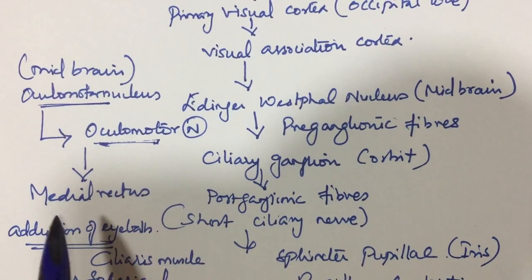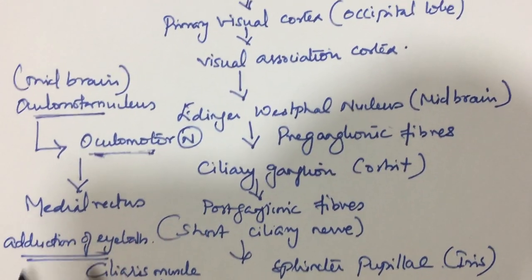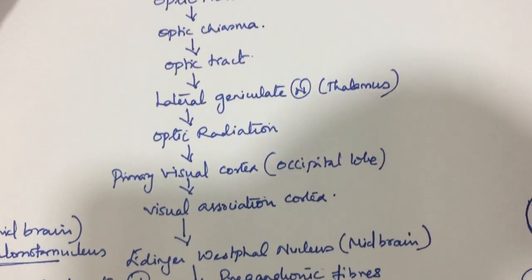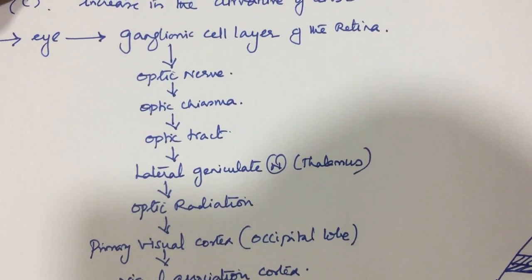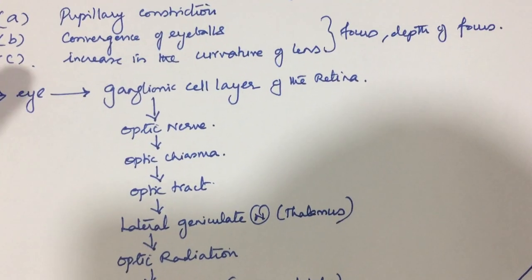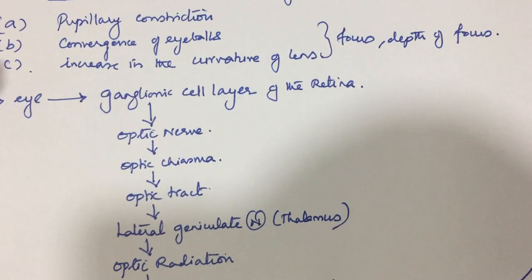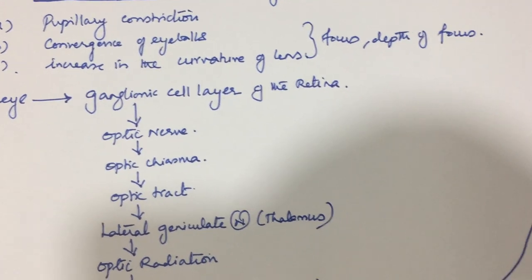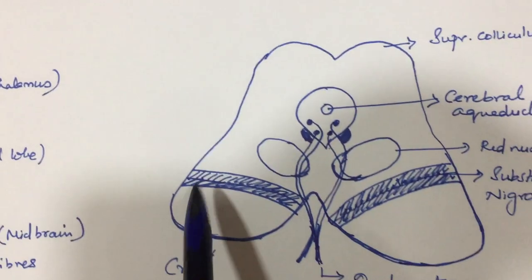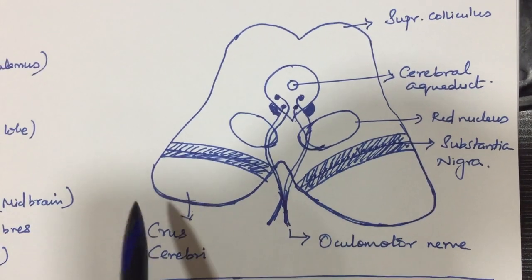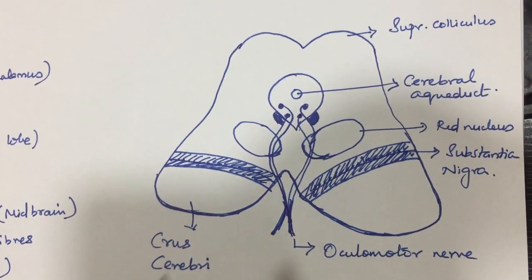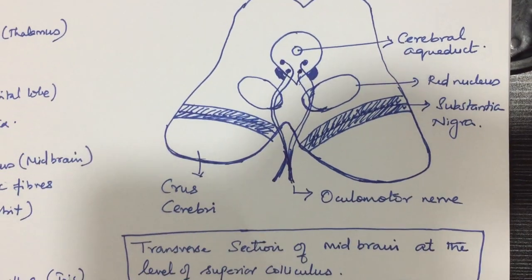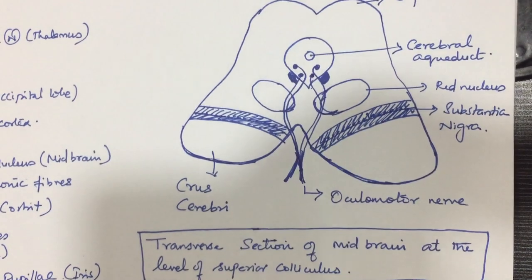This is how all three features of accommodation—the pupillary constriction, convergence of eyeballs, and increase in the curvature of the lens—are brought about. We can just have a quick schematic representation of the nuclei in the midbrain. This is the transverse section of midbrain at the level of superior colliculus.